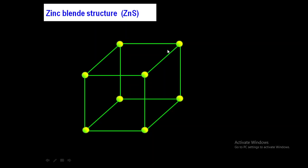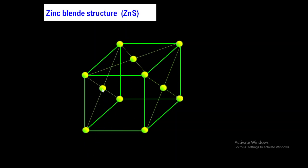Zinc blende structure is a cubic structure — specifically a face-centered cubic structure. Look at this unit cell: eight sulfur ions are present at the corners, and six sulfur ions are at the face center of each face of this cube. This is the center of the left face, the right face, the top face, the bottom face, the front face, and the back face.